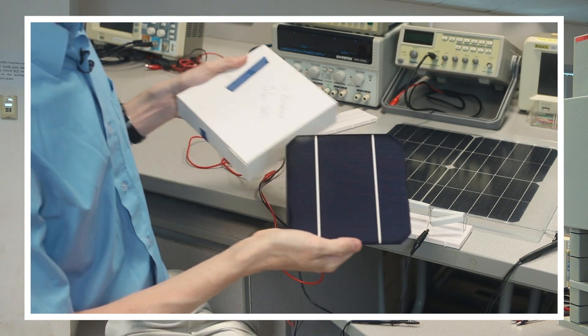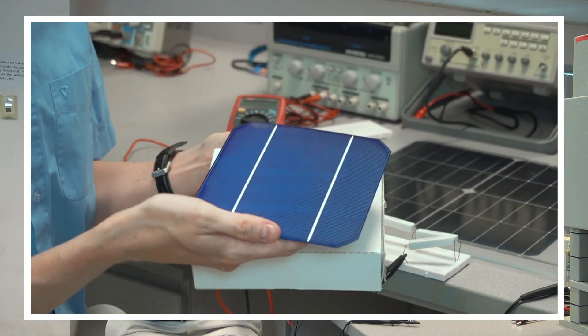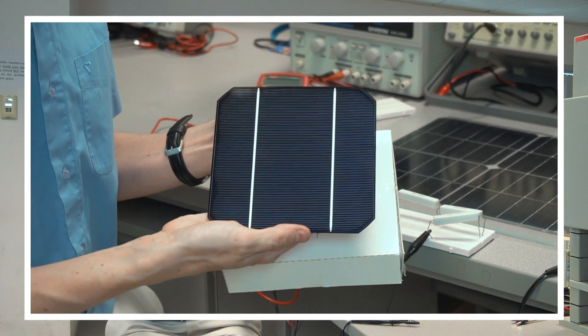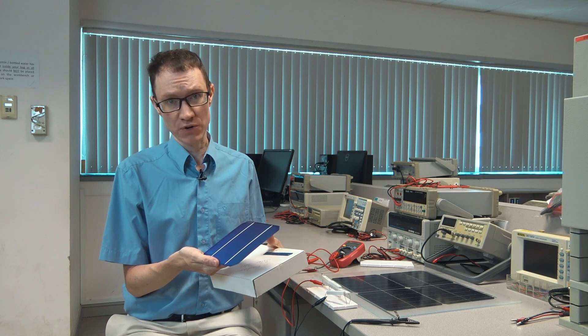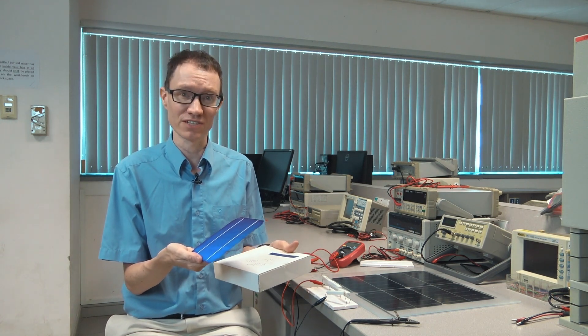First of all, solar cells before they're packaged are incredibly thin. So I'm holding here a silicon solar cell, and the first thing you might notice is that the top side is kind of dark. Silicon on its own is not dark, it's metallic, so this has an anti-reflection coating. An ideal solar cell would be black because it would absorb all the sunlight and convert it to electricity.